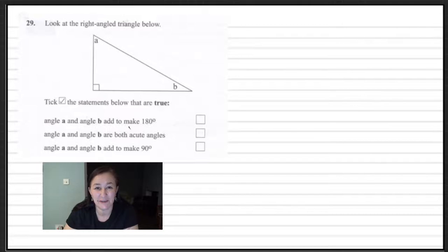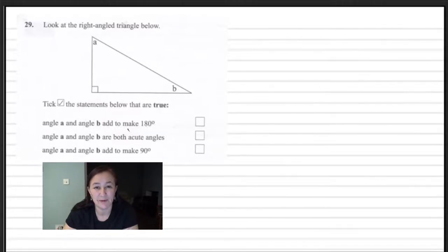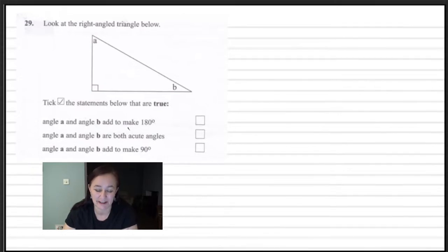Hello and welcome to another video exploring some possible questions coming up in the transfer test and looking to help kids prepare for that test. For this one we're looking at a right-angled triangle and it's asking some questions around some statements that are given there as fact and you have to basically choose which ones are correct.